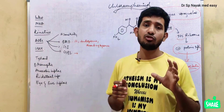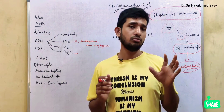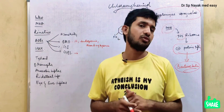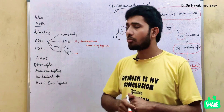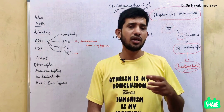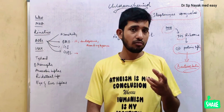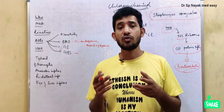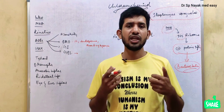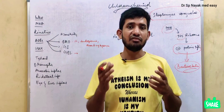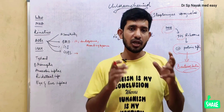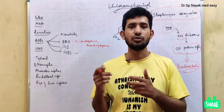While talking about chloramphenicol, we have to focus mainly on pharmacokinetics and adverse drug reactions. Chloramphenicol is formulated in the oral form, IV form, and also the topical form. It is very much absorbed through the GI tract. It is metabolized in the liver by glucuronide conjugation, and the metabolic end products are excreted through urine.